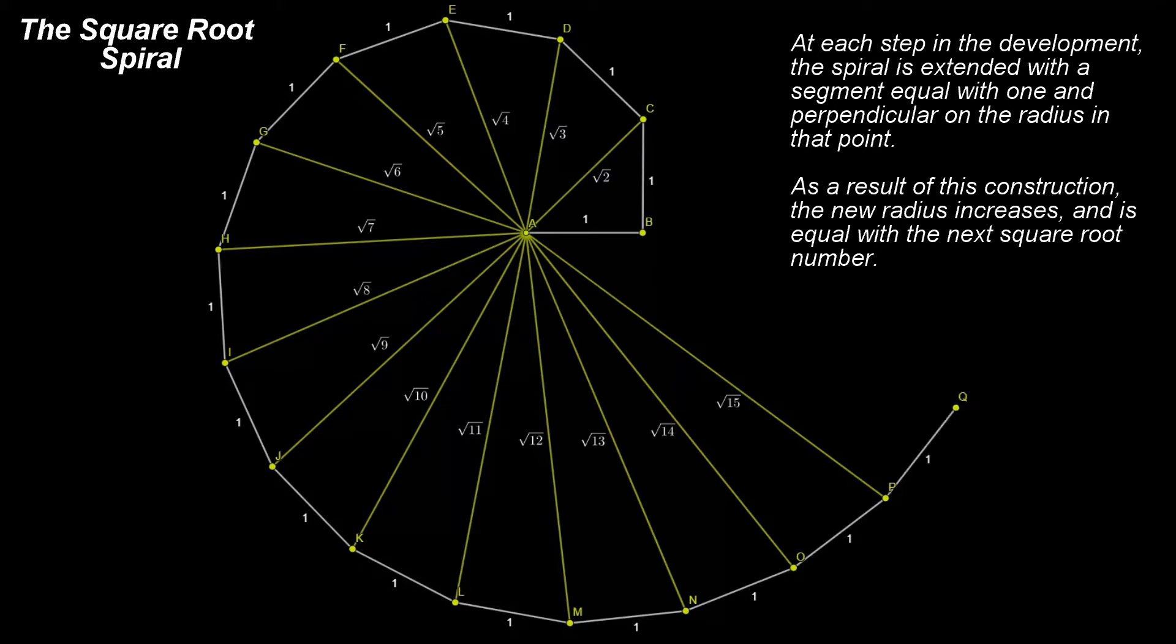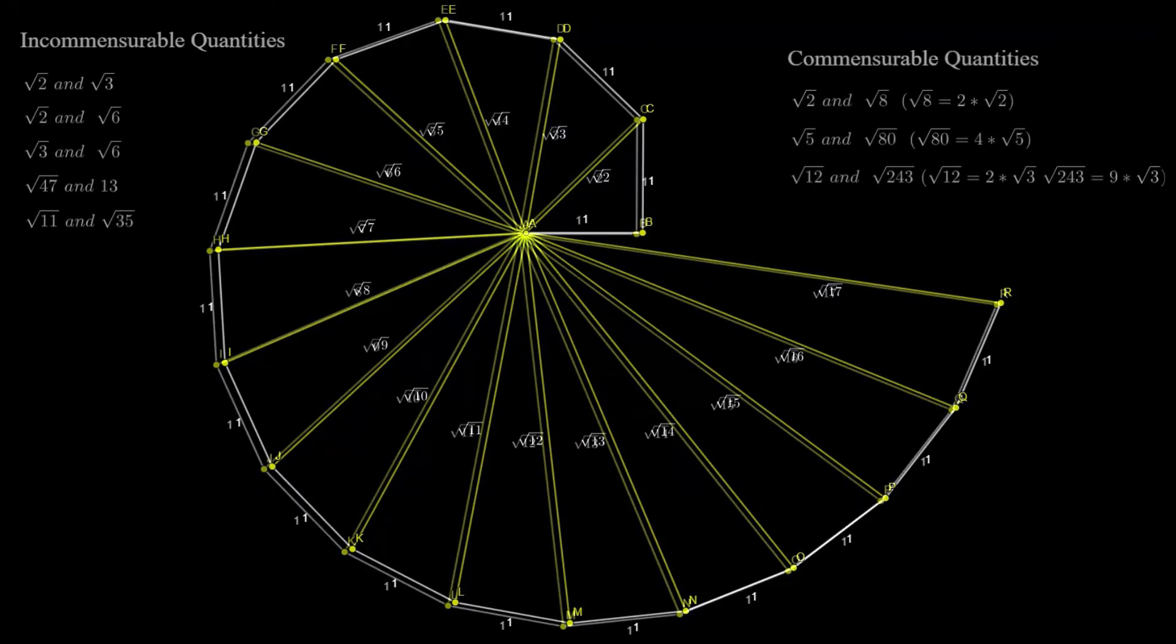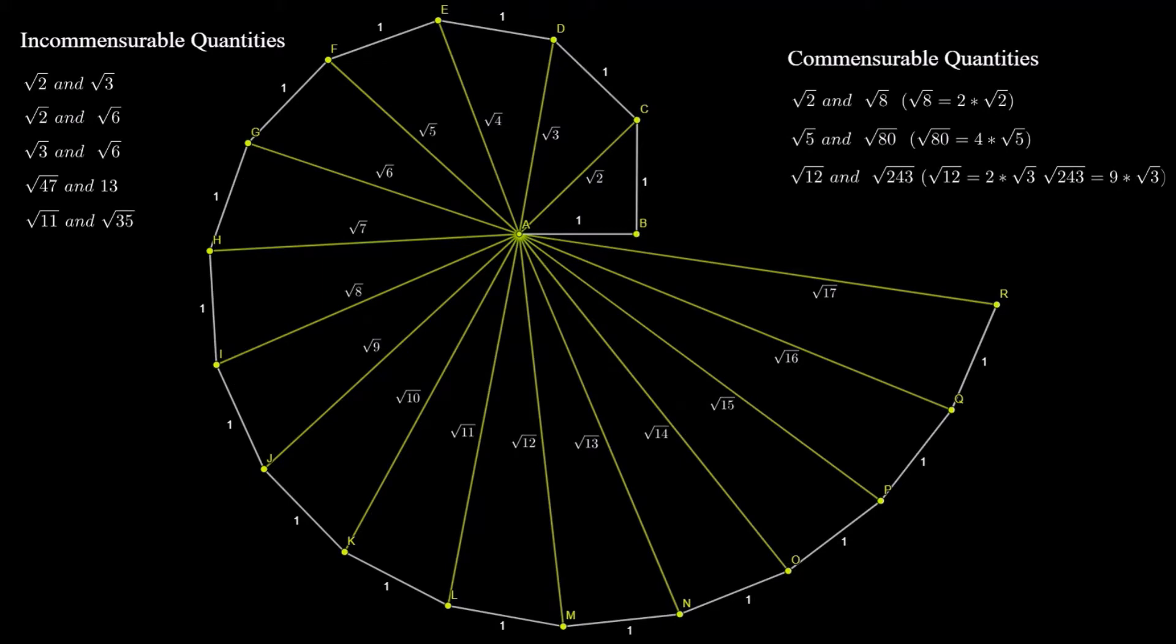In fact this is the rule. We also shall note that quantities like the square root of 2 and the square root of 8, or the square root of 5 and the square root of 80, or the square root of 12 and the square root of 243 are commensurable quantities.